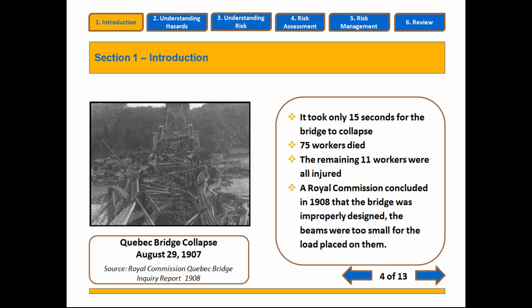The first is the Quebec Bridge collapse of 1907. 75 workers were killed in the collapse of the bridge while it was under construction, and the subsequent Royal Commission determined that the reason the bridge collapsed was because it was improperly designed — it was not designed to be strong enough for the loads that were required. It's truly horrific. 75 workers kissed their loved ones goodbye and went off to work the morning of August 29th, 1907, and they didn't come home.